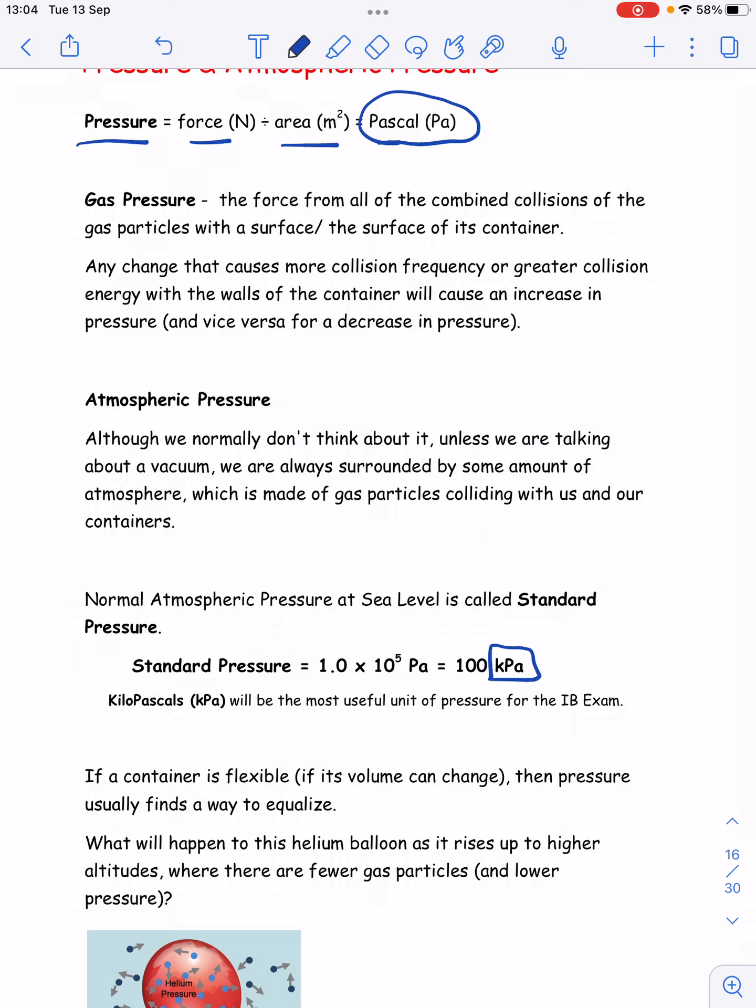So gas pressure, where does the force come from? Well, the force of a gas comes from all of its collisions, all the gas particles colliding with the container walls, with the surface of the containers. So that's where the force comes from. And then the area is how much area is there on this container, on its walls. So that's where pressure is coming from. The force of the collisions on the area of the surface of its container.